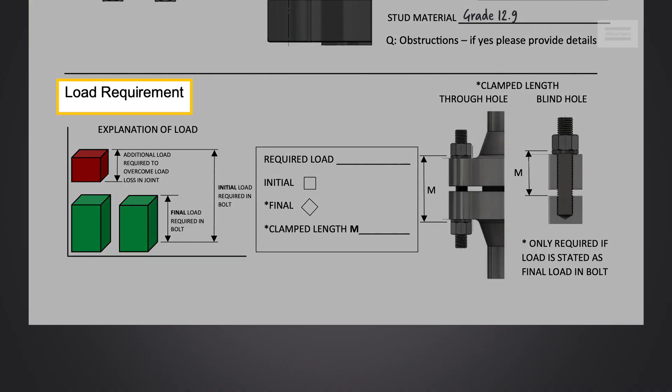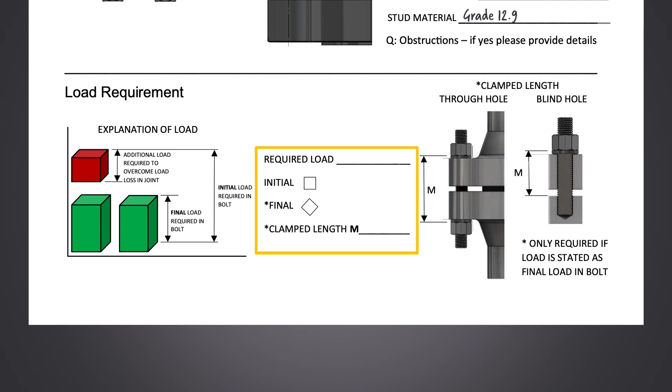The two types of load that can be given are initial and final. The final load, also known as the residual load, is the load that is required when the joint is completed.